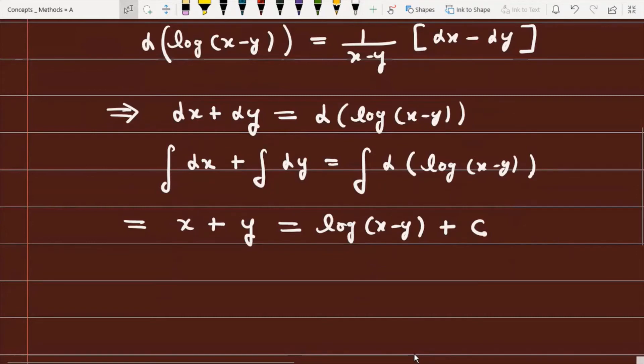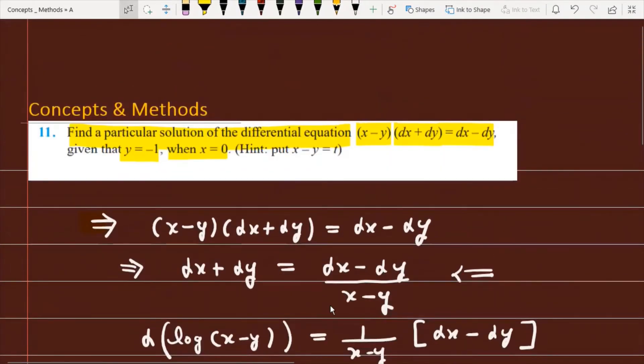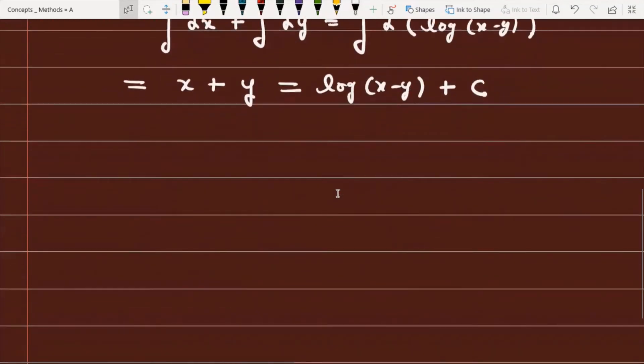Now to find the constant value, there is an initial value condition: when x = 0, the value of y = -1. So this condition we have to use here.